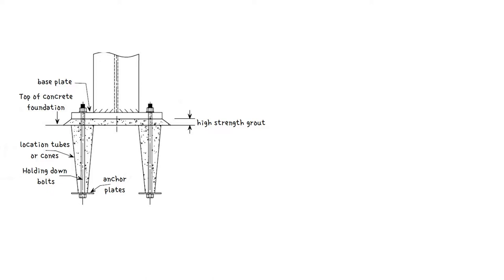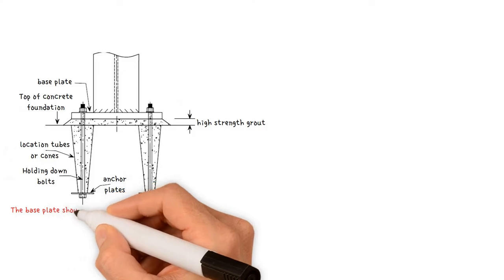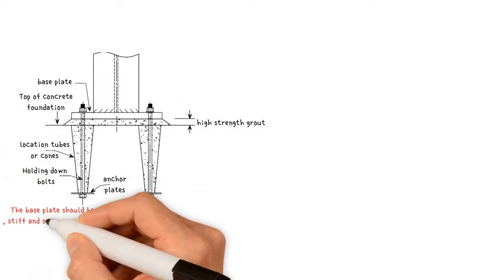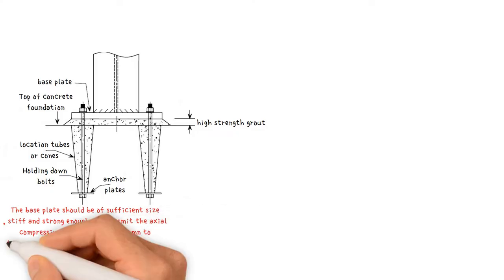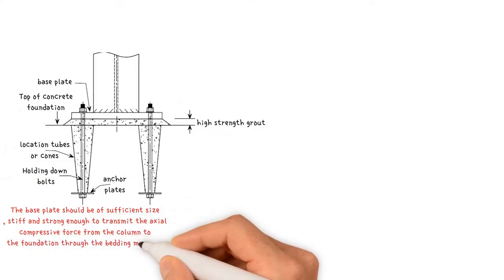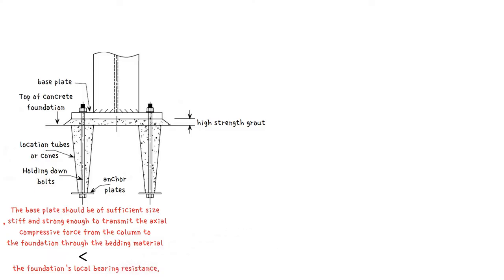Typically, such column bases are thought to be only subject to axial compression and shear. The baseplate should be of sufficient size, stiff and strong enough to transfer the axial compressive force from the column to the foundation through the bedding material without exceeding the foundation's local bearing resistance.